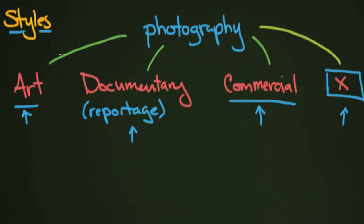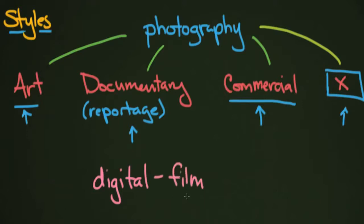You can do all these different styles of photography in a couple of different ways these days. In the modern world, we have digital photography — the way most of us are taking photographs today. But that's actually not that old. When I was a kid, you didn't have digital cameras; you had film cameras, and film cameras were how photography was performed for a long time. You also have video — some people are surprised, but yes, it's photography. It's just photography that happens to be moving at about 24 pictures per second or so.